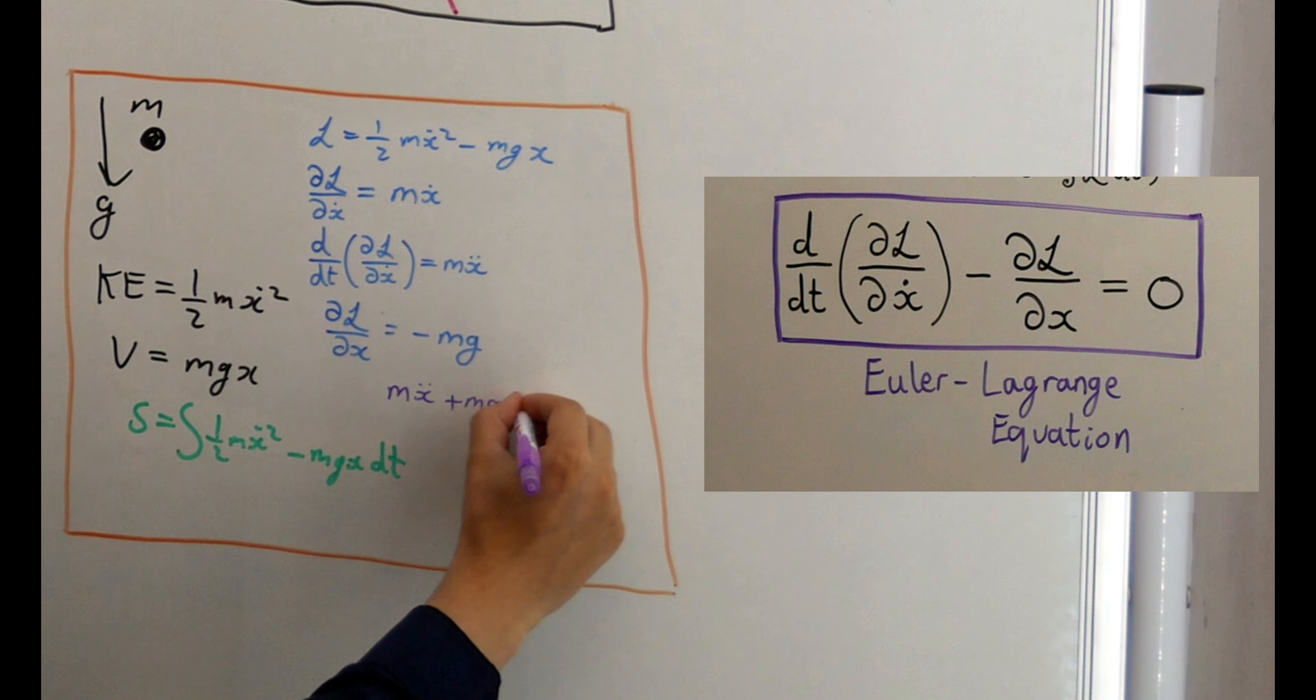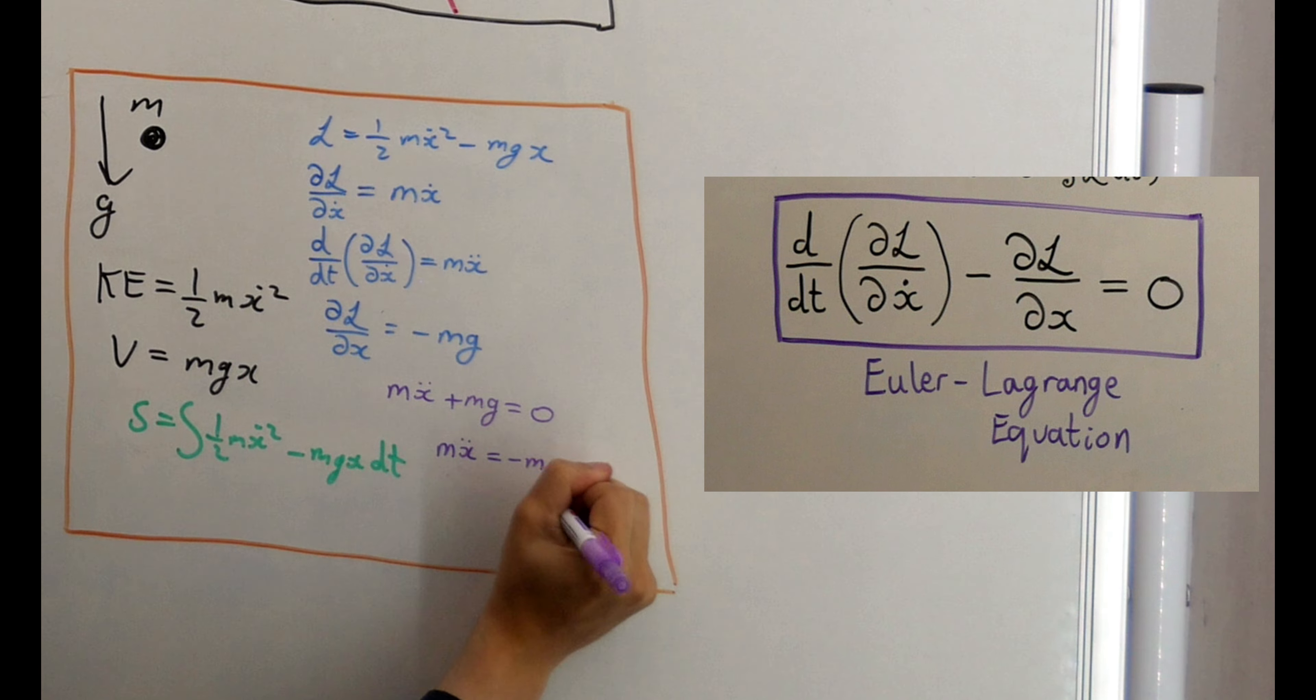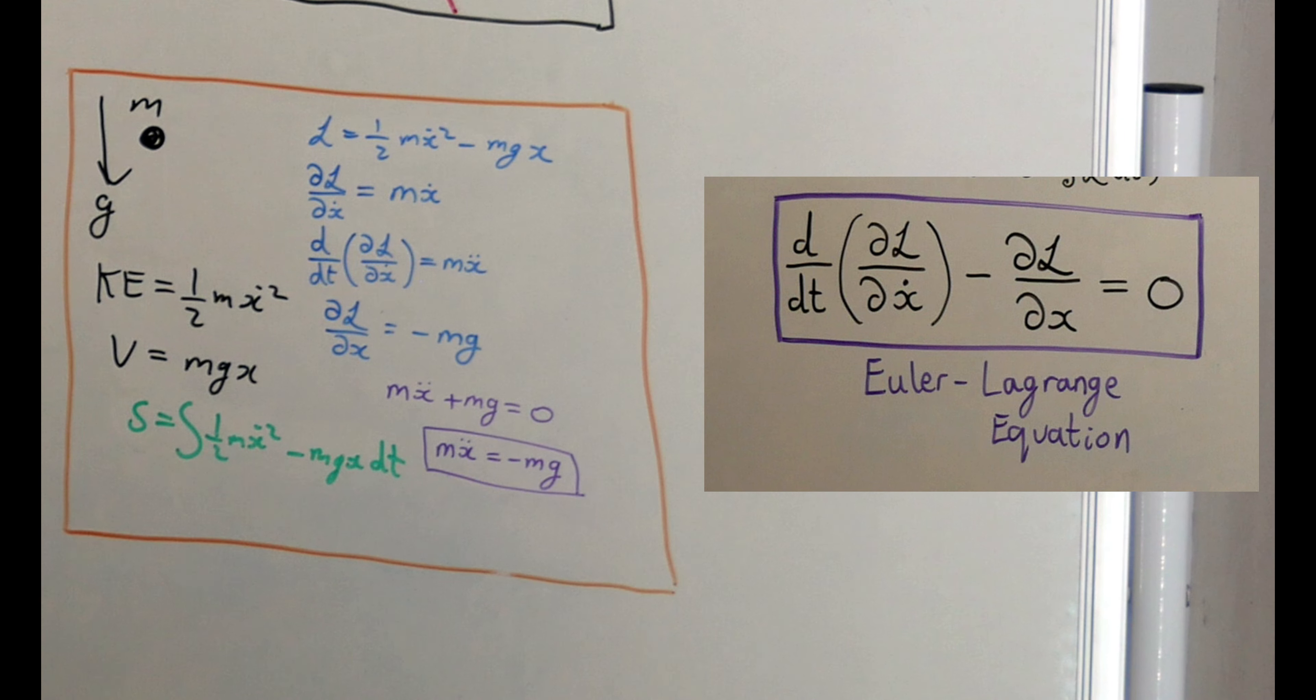we get our Euler-Lagrange equation for this system, and we find something quite remarkable. We find that the action is minimized when the mass times the acceleration of our particle is equal to the gravitational force, the weight of that particle. This is just Newton's second law for the gravitational force.